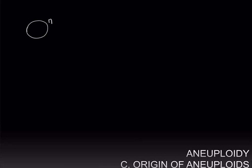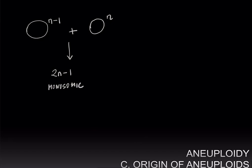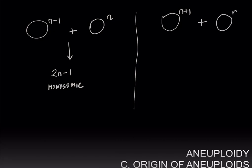The zygotes that result from fertilization with aneuploid gametes are aneuploid, and therefore non-disjunction is the origin of aneuploidy. For example, if we have an n-1 gamete that fertilizes an n gamete, this will result in a zygote with 2n-1 chromosomes — in other words, a monosomic zygote. On the other hand, if you have an n+1 gamete fertilizing an n gamete, the resulting zygote will be 2n+1 and would therefore be a trisomic.